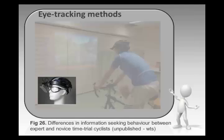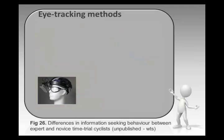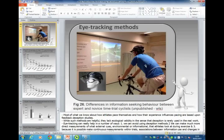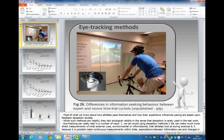We need to think about new methodologies, tackling this problem from a different kind of way. One study we've been doing recently uses an eye tracker. We get expert time trial cyclists, good club time trial cyclists, and complete novices to cycle, and we put an eye tracker on them and display a range of information in front of them on a screen. We measure what it is they're looking at during a 10-mile time trial.